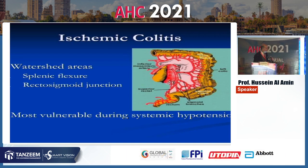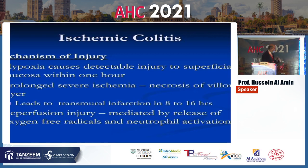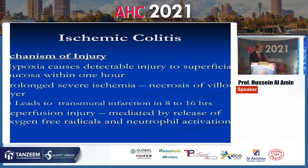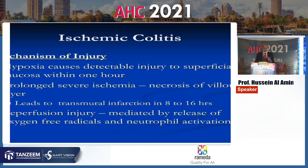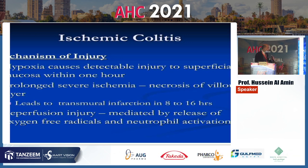The mechanism of injury begins with hypoxia causing detectable injury to the superficial mucosa within one hour, affecting the mucosa in more than 85 percent of cases. Prolonged severe ischemia may affect the muscularis mucosa and also the transmural layer. Reperfusion injury is very important and may cause more injury than the direct ischemia itself, caused by the release of cytokines and oxygen free radicals.